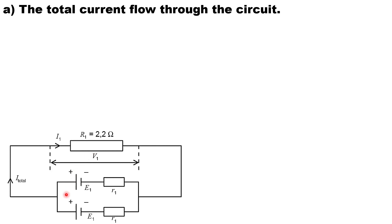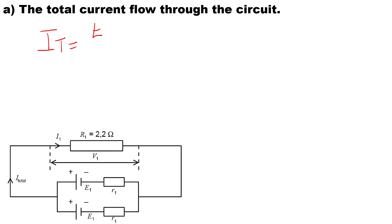The first question asks us to calculate the total current flow through the circuit. The formula for total current is: I total equals EMF total over R (external resistance) plus r (internal resistance).